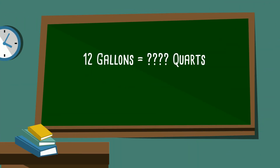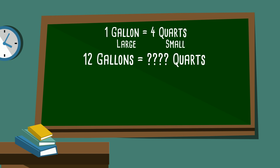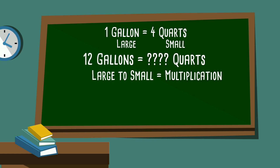Now we have 12 gallons — that equals how many quarts? The hint: one gallon equals four quarts. Gallons is larger than quarts, so we are going to multiply because we are going from large to small. We will multiply 12 times four, because one gallon equals four quarts.